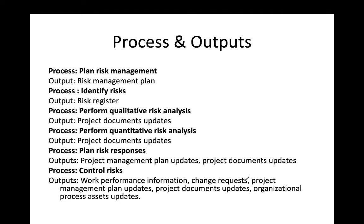Let's look at the outputs of each process. The first step is plan risk management — its output is the risk management plan. The second step is identify risk — this means studying what risks exist and what their positive or negative impacts will be. You then create a register for that information, called the risk register, which contains all risk-related information.